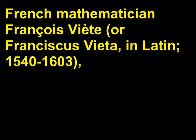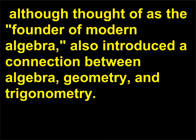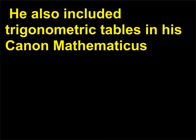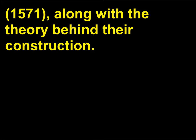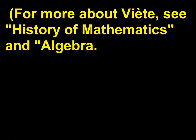French mathematician François Viète, or Franciscus Vieta in Latin (1540-1603), although thought of as the founder of modern algebra, also introduced a connection between algebra, geometry, and trigonometry. He also included trigonometric tables in his Canon Mathematicus (1571), along with the theory behind their construction.